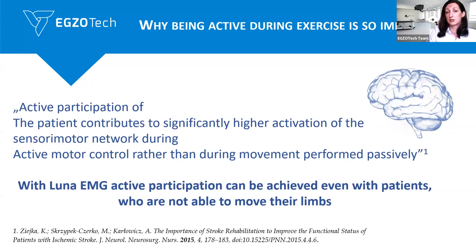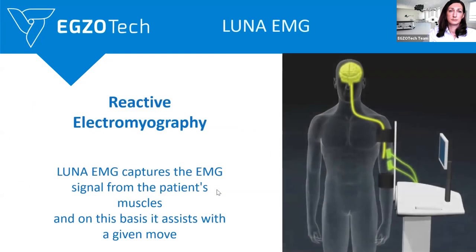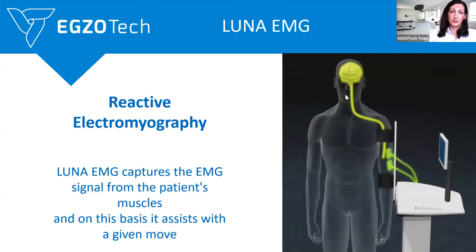This can be achieved even with patients who cannot voluntarily move their limb. How does Luna EMG work? The main feature of the robot is reactive electromyography. Luna EMG captures the signal from the patient's brain and captures the signal from the muscles via EMG surface electrodes, and on this basis it assists with a given movement.